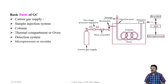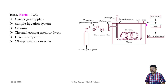The basic parts of a gas chromatograph are: first, the carrier gas supply; next, the sample injection system; then the column; next, the oven into which the column is placed; then the detection system; and finally the recording/computer/microprocessor system.